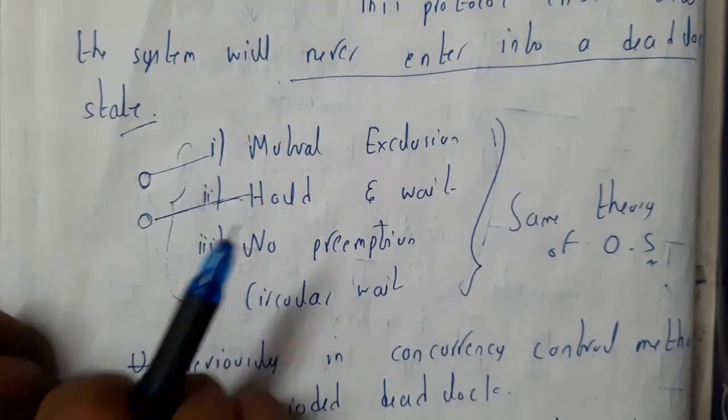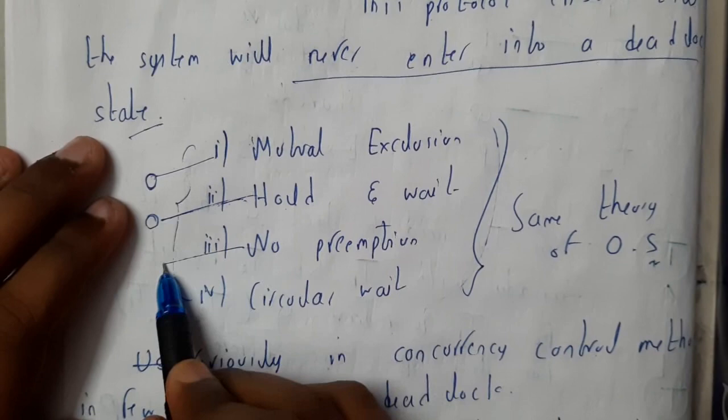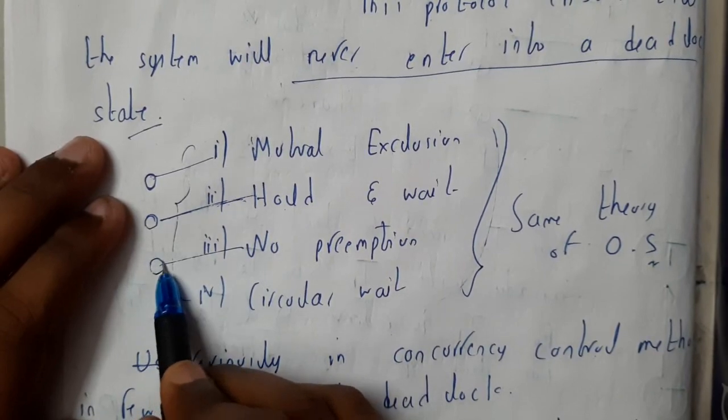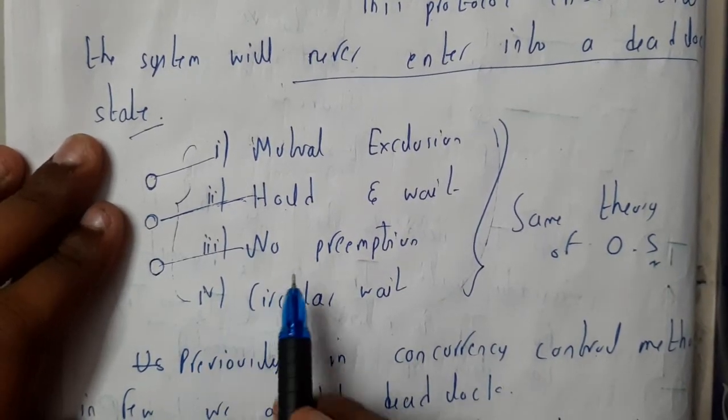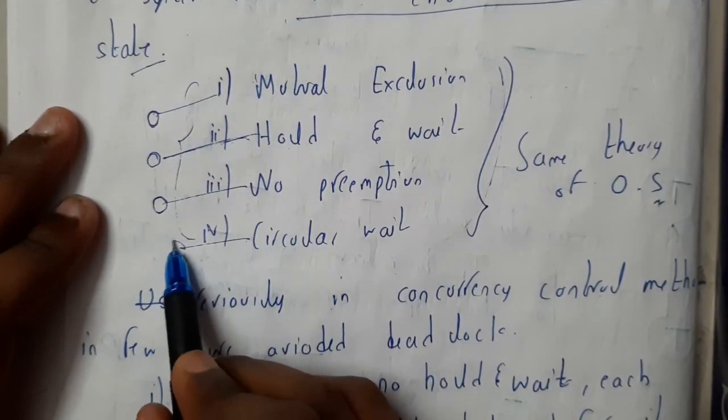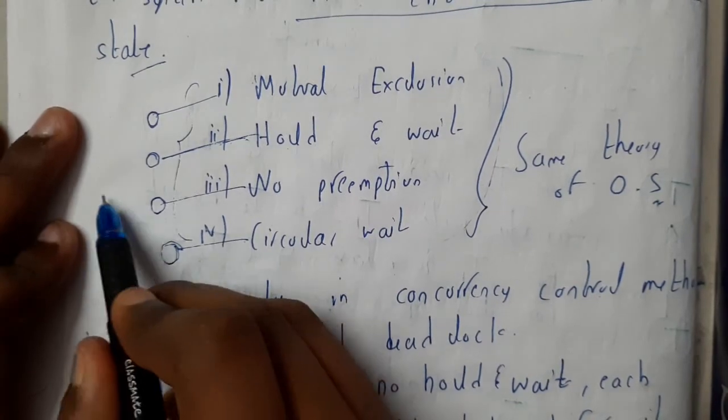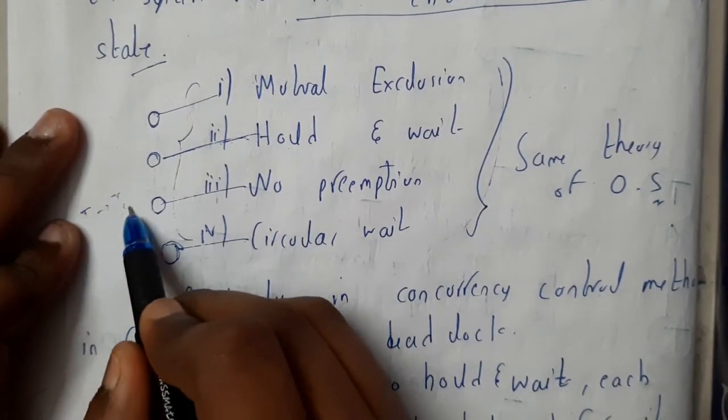No preemption means once everything is allocated like resources, it should never stop for another process. Next is circular wait, which means there should be no situation of circular wait like T1 requesting resource of T2, T2 requesting resource of T3, and so on.